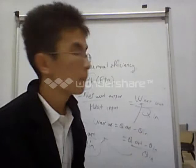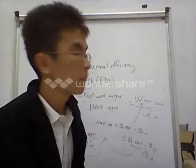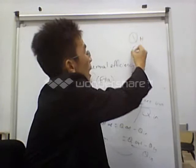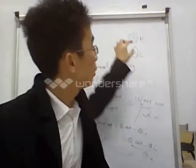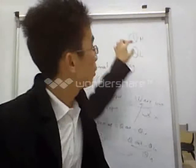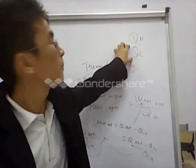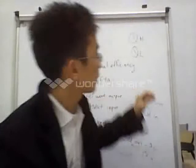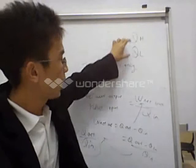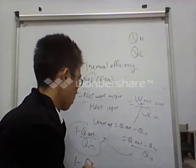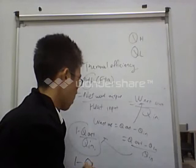This is the formula to calculate thermal efficiency. Now I will introduce some new terms: Q_H is the magnitude of the heat transfer between the cyclic device and the medium at temperature H, whereas Q_L is the magnitude of heat transfer between the cyclic device and the medium at temperature L. Of course, the temperature at Q_H is higher than at Q_L. So you substitute Q_H and Q_L into the formula, and you will finally get: η = 1 minus Q_L over Q_H for your final thermal efficiency.